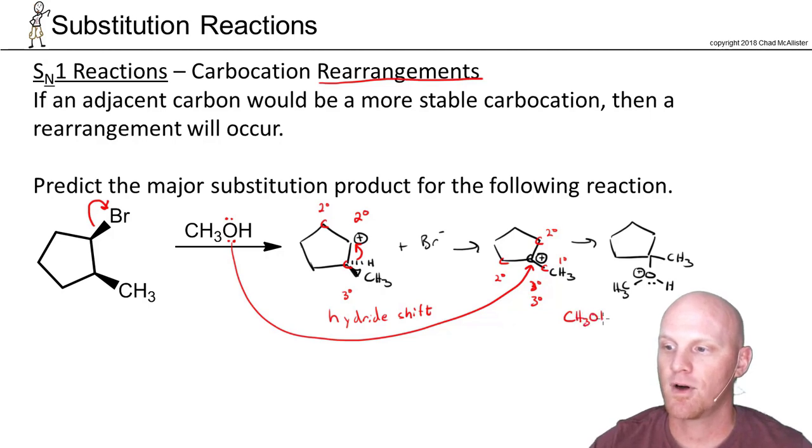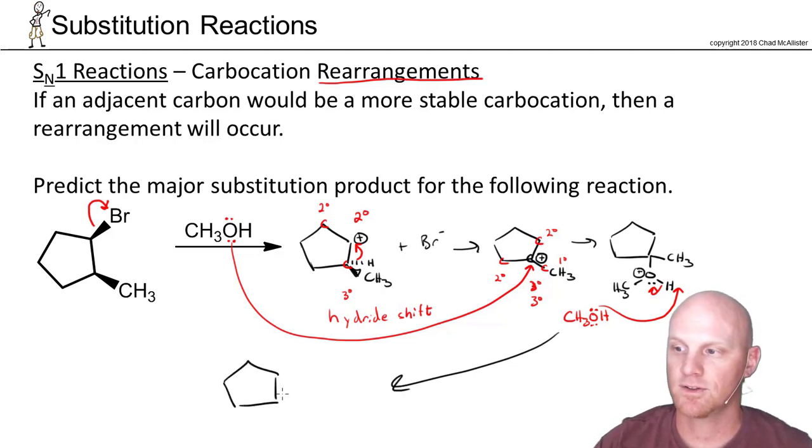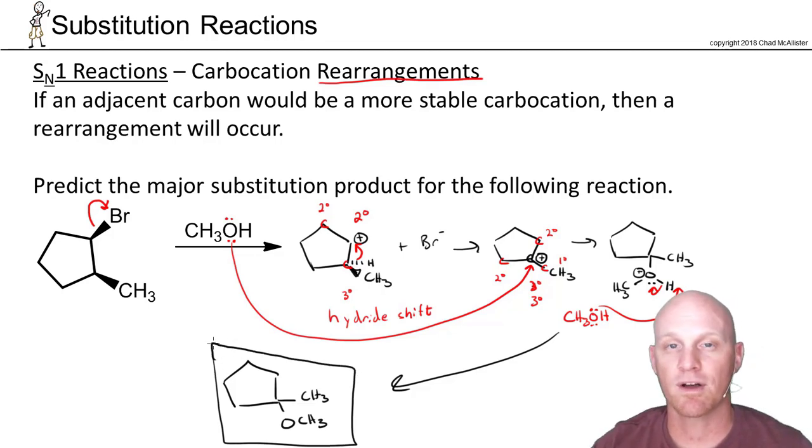A methanol molecule comes in and deprotonates, getting us to our final product with a methyl group and an OCH3 here. We didn't form any chiral centers, so we don't have to worry about stereochemistry—we just get one achiral product.